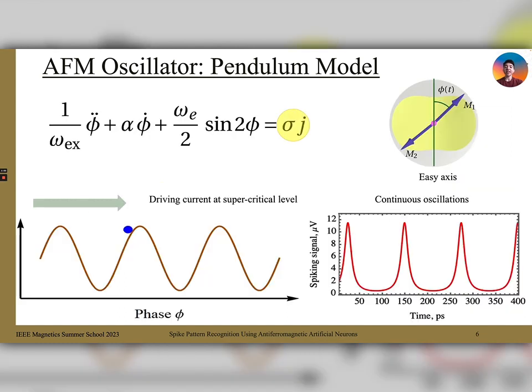The oscillator can now act as an inertial particle under driving force, with the driving force being the spin torque from the spin current. When the current is at a supercritical level, the AFM will act as an auto-oscillator, continuously outputting spikes. But consider the case where the driving force is at a subcritical level, and the spin current alone is not enough to send it into an oscillation.